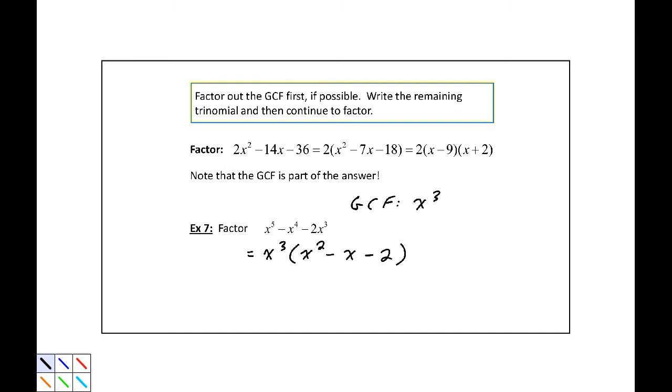Now I want to look for values that multiply to be negative 2 but add to be negative 1. That list isn't very long. I have 1 and 2, actually let's make that 1 and negative 2. That way they multiply to be negative 2, but now they also add to be negative 1.